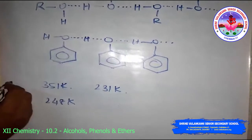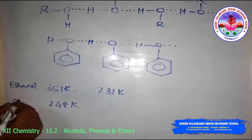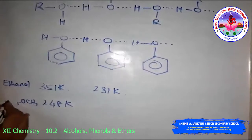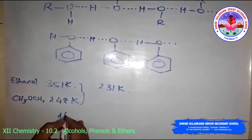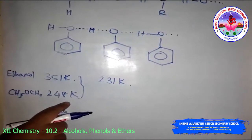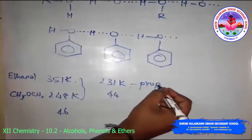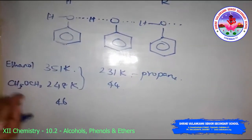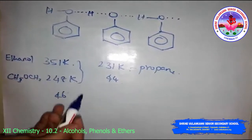Ethanol and methoxymethane both have a molecular mass of 46, but their boiling points differ: 351 K for ethanol and 248 K for methoxymethane. Propane has a molecular mass of 44 and a boiling point of 231 K. The high boiling point of alcohols is mainly due to intermolecular hydrogen bonding, which is absent in ethers and hydrocarbons.